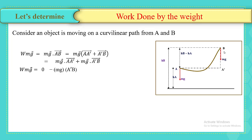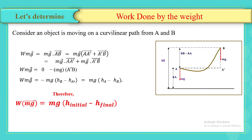The distance A′B is equal to H_B minus H_A. So the expression of the work done by the weight becomes −mg(H_B − H_A). Introducing the minus sign inside the parentheses gives mg(H_A − H_B). Since A is the initial position and B is the final position, the expression of the work done by the weight is equal to mg times the initial height minus the final height: W_weight = mg(H_A − H_B).